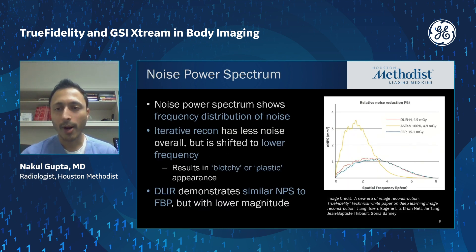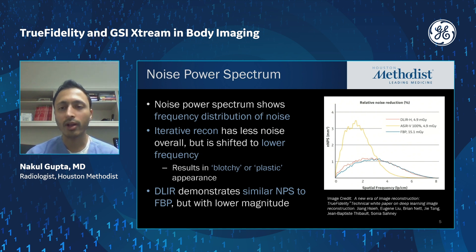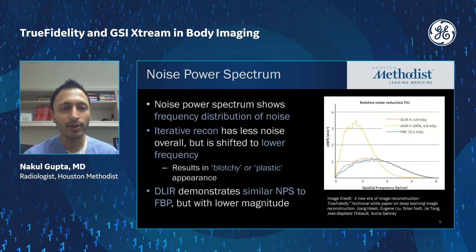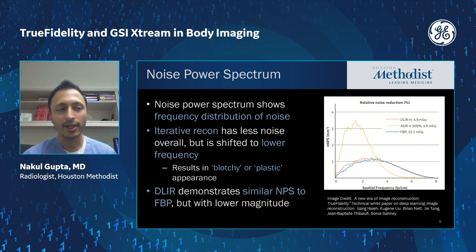One of the most important properties is the noise power spectrum — the frequency distribution of noise in your image. Iterative reconstruction techniques, while they may have lower noise overall, have a noise power spectrum shifted towards lower spatial frequencies, which is thought to result in the blotchy or plasticky appearance of iterative reconstruction images. DLIR, by contrast, has a noise power spectrum very similar to FBP, which gives it that more natural texture we're all used to.